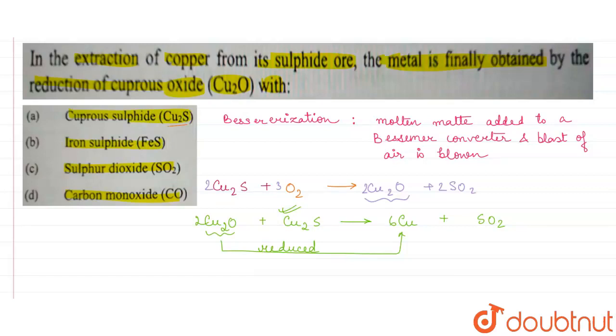So clearly we can say that Cu2S is the cuprous sulfide, so this is only the correct answer. Rest all the options are wrong. So hope this answer helps you. Thank you.